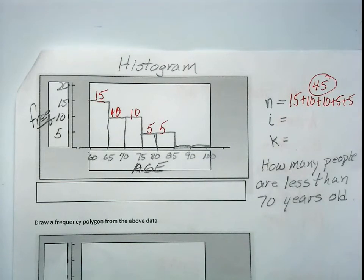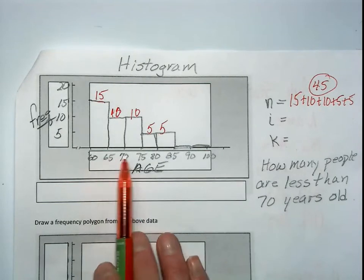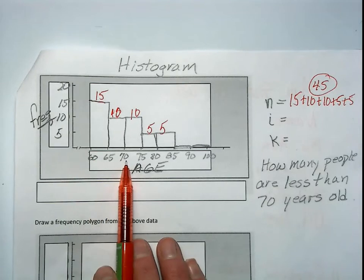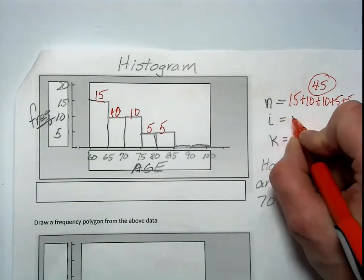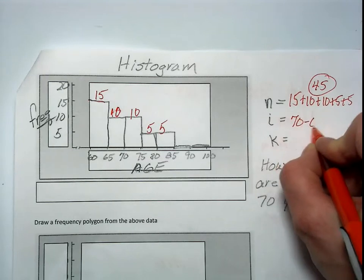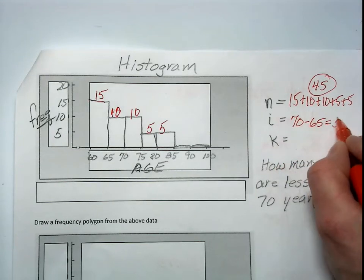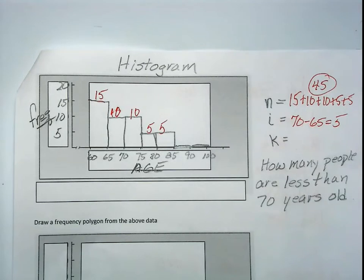i, interval. Instead of the calculation from using the raw data, if we were just given the histogram, we can calculate the interval by taking any of these upper limits minus the lower limit. Seventy minus 65, the interval's 5. The interval should be consistent throughout the histogram, except if we have an open-ended histogram. For example, if there were many people younger than age 60, we would have an open-end bar on that side.